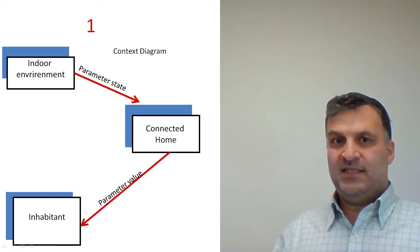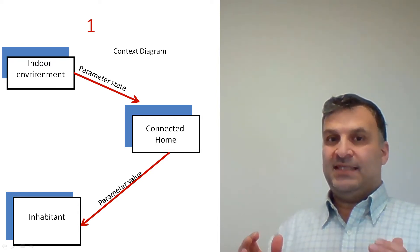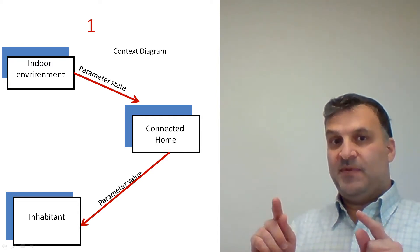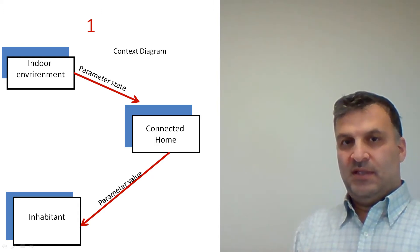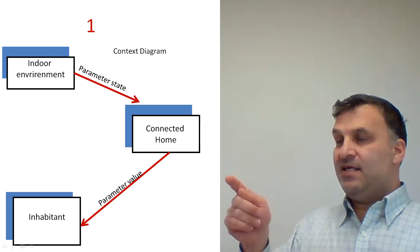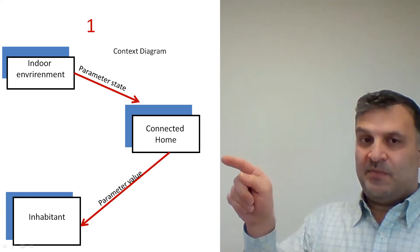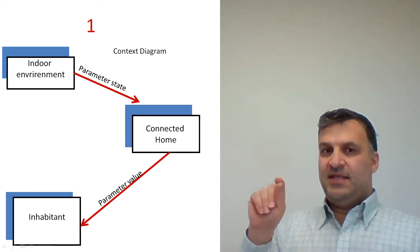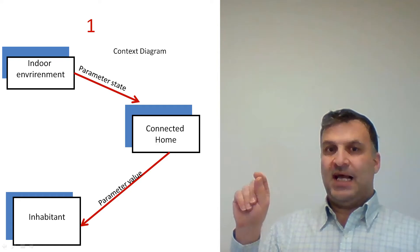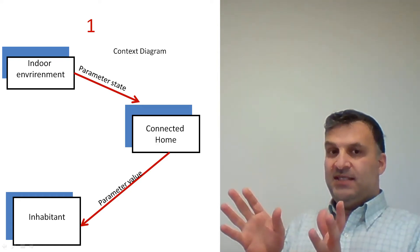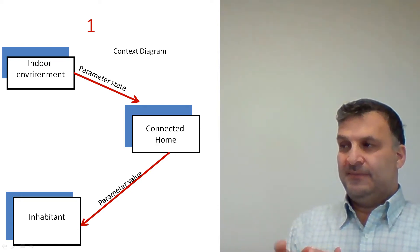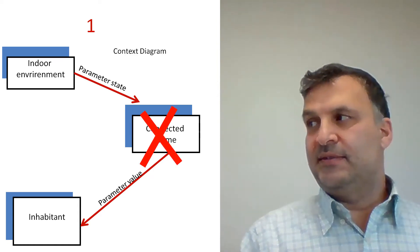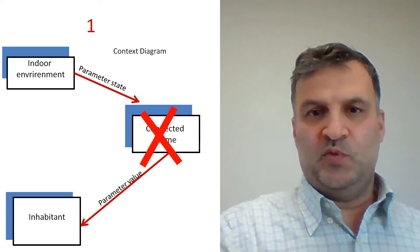What is the mistake here? As you can see, we have a system called 'Connected Home,' but there is no representation of a process. When we represent a system at the context level, the entire system is represented by one process. Here there is no process — this is only the representation of external entities. We cannot use this symbol to represent a process, so this is not a context diagram. This is the error.